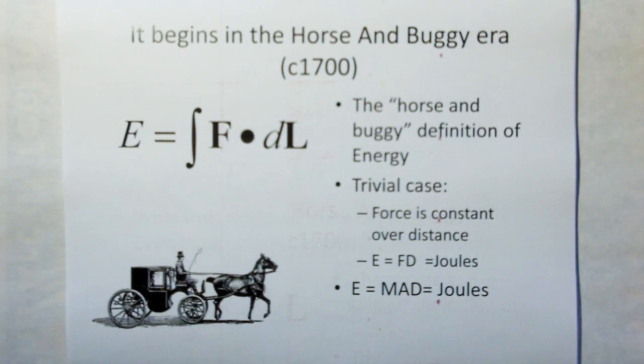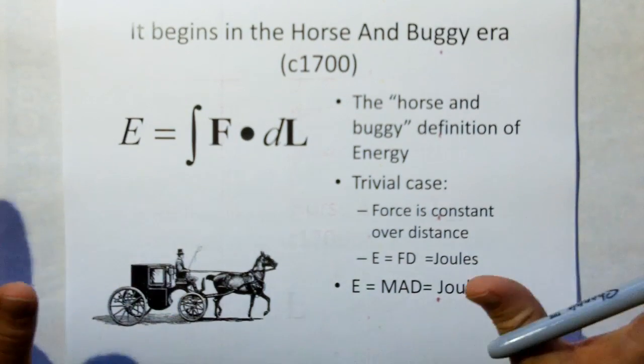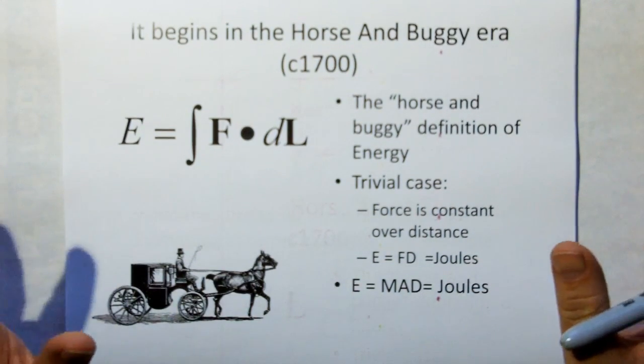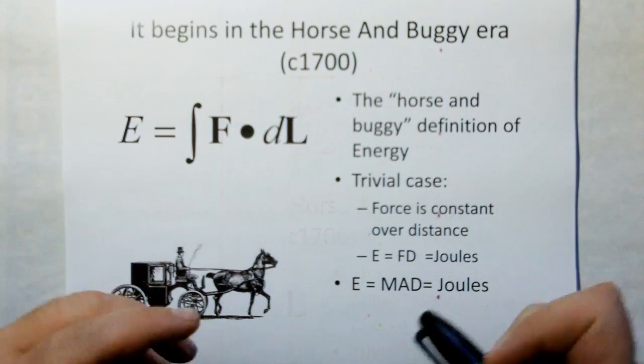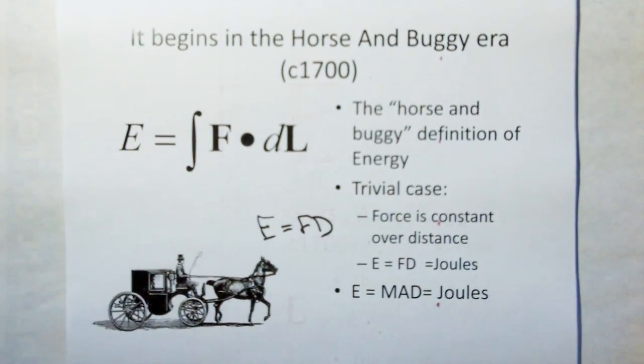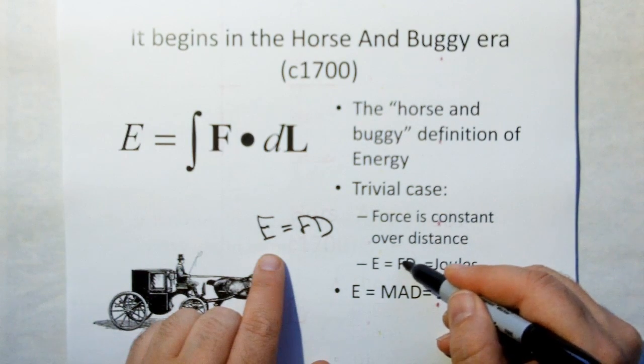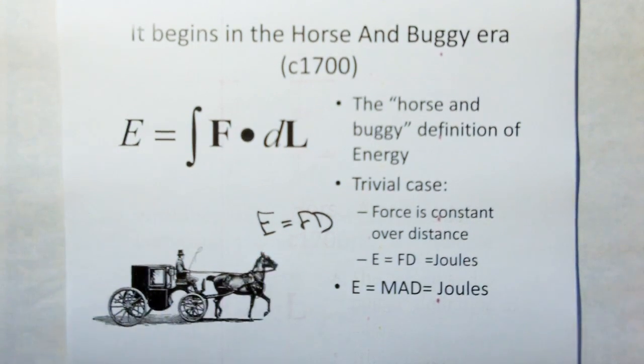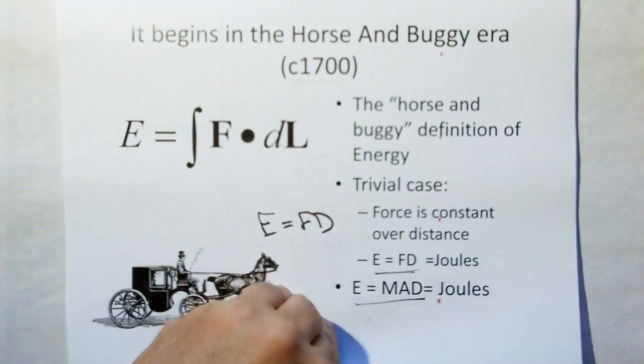This problem begins in the horse and buggy era, circa 1700. There was the original definition of energy which follows this integral. To keep the math simple, we'll do the trivial case where force is constant over distance and the direction of force and distance are parallel. That way we can use energy equals force times distance. Energy equals force times distance, or mass times acceleration times distance, both in units of joules. We'll use the MAD definition of energy.